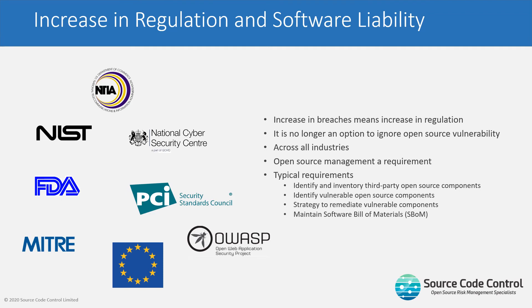From a security perspective, it's imperative that third party open source components are tracked. Because of the increase in exploits of third party open source vulnerabilities, there's an increase in regulation across certain industry sectors which specifically call out the need to identify vulnerable open source components. For instance, the PCI Standards Council has a secure software lifecycle standard which explicitly calls out the need to inventory open source components, identify if they're vulnerable, and have a strategy for remediating. There are similar things coming out of NIST, FDA, MITRE, and the European Union. Typically there's a need to maintain a software bill of materials.